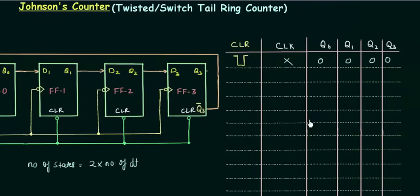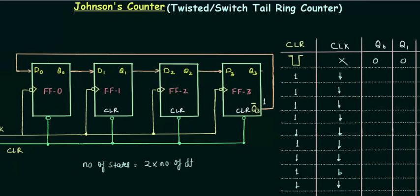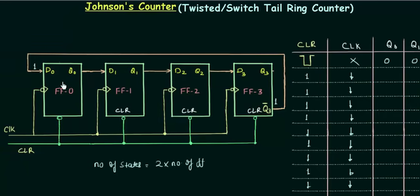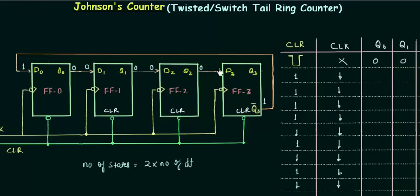Let's see how it counts. I have already written the output when the overriding input is low — all outputs are 0. Now we will make the overriding input high for the rest of the cases. The flip flops are negative-edge triggered, so all changes occur on the falling edge. When Q3 is 0, Q3 complement is 1, and since Q3 complement is connected to D0, D0 is 1. I am finding the input to all 4 flip flops first, then we will see the output. So D0 is 1, D1 is 0, all outputs are 0 so D2 is 0, and Q2 is 0 so D3 is 0.